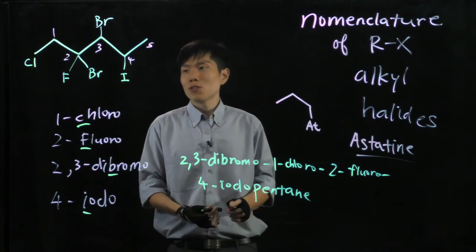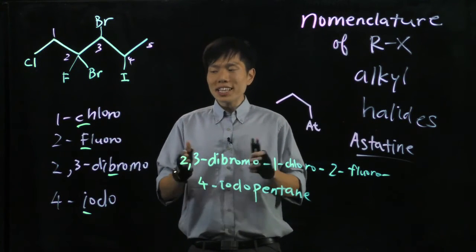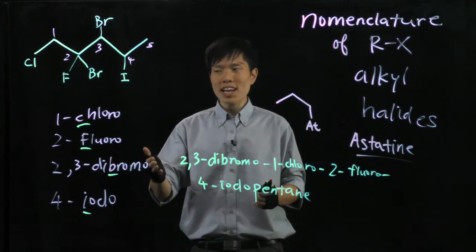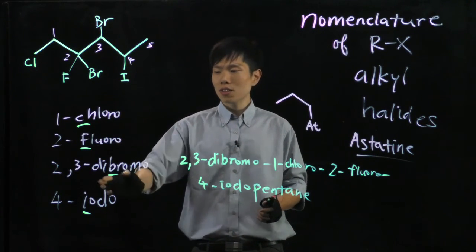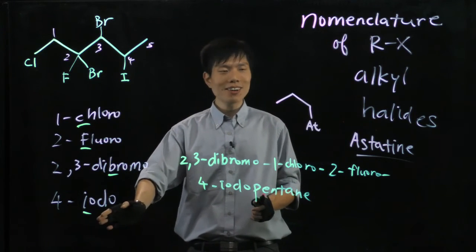By now you have learned that in organic chemistry you see a pattern, a trend. So from chlorine you get chloro, fluorine, fluoro, bromine, bromo, iodine, iodo. So now we have astatine.